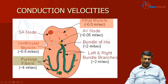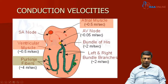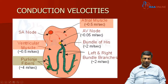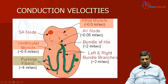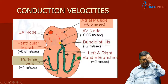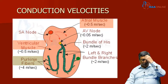Depolarization means positive charge ions are entering the cell, making intra-cell positivity and out-cell negativity. So what is the concept of QRS widening? Why does the QRS get widened? Why does the QRS become more than 0.08 or definitely more than 0.12 seconds?